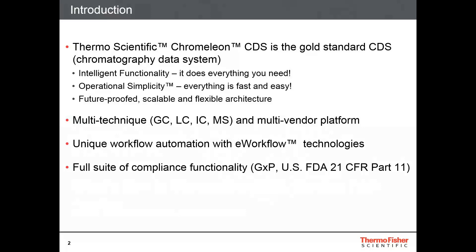Chromeleon 7.2 was the first CDS to combine separation — GC, IC, LC — and mass spectrometry in an enterprise environment. By extending Chromeleon beyond chromatography into mass spec, you can now streamline the chromatography and MS quantitation workflows with a single software package. The MS support is focused on routine and quantitative workflows, which gives LC, GC, and IC-MS users access to the existing rich quantitative data processing and automation capabilities of Chromeleon.